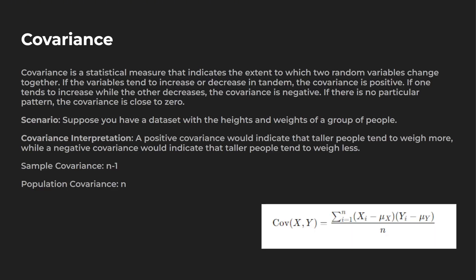But before we do that, I want to go over a little bit more information about covariance. So covariance is a statistical measure that indicates the extent to which two random variables change together. The variables tend to increase or decrease in tandem — the covariance is positive. If one is increasing while the other one decreases, the covariance is negative. And if there's no pattern, you're going to have a covariance near zero.